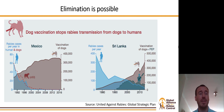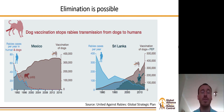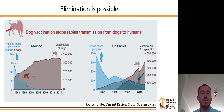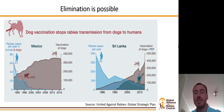We see this in examples not only in the developed world, but in the developing world too, such as in Mexico, where as there is an increase in the number of dogs that are being vaccinated, there is a decrease in the number of animal and human rabies cases. Similar such examples are available throughout the developing world, such as Sri Lanka.